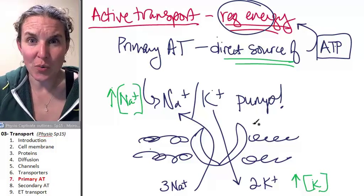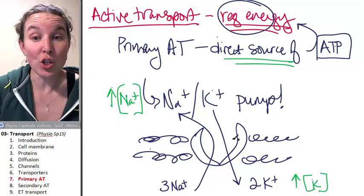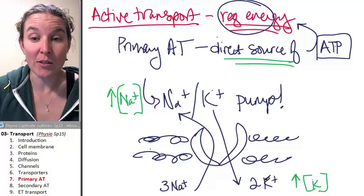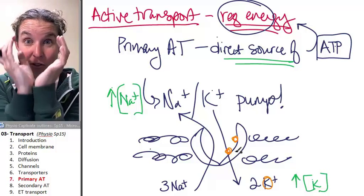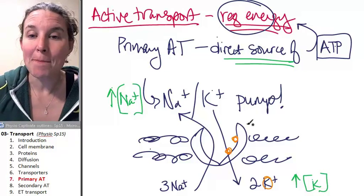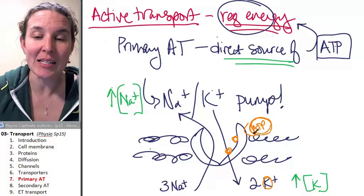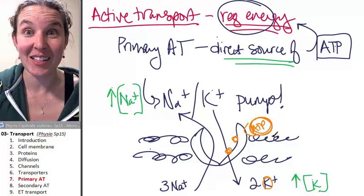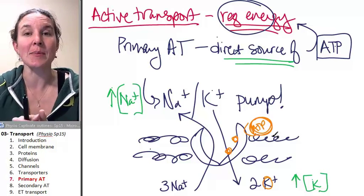What does it mean it requires a direct source of ATP? It means that literally two potassiums can bind to my transporter, and that causes somewhat of a shape change, but you have to have ATP bind to as well. When ATP binds to my transporter with the two potassiums, then the shape changes.